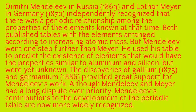Dimitri Mendeleev in Russia in 1869 and Lothar Mayer in Germany in 1870 independently recognized a periodic relationship among the properties of the elements known at that time. Both published tables with elements arranged according to increasing atomic mass. But Mendeleev went one step farther than Mayer — he used his table to predict the existence of elements with properties similar to aluminium and silicon that were yet unknown. The discoveries of gallium in 1875 and germanium in 1886 provided great support for Mendeleev's work.